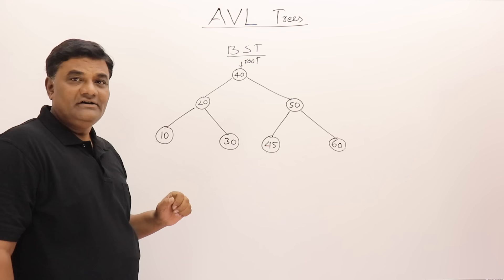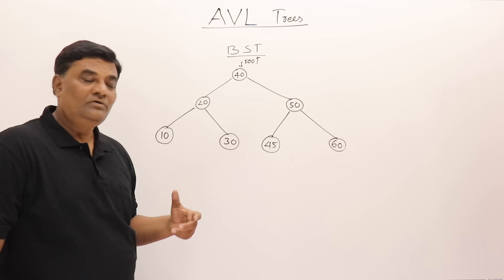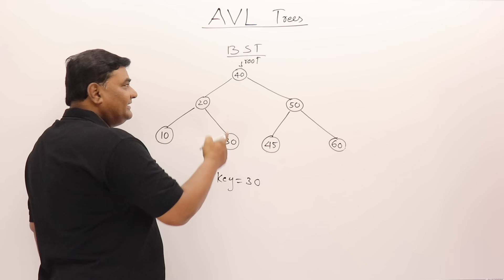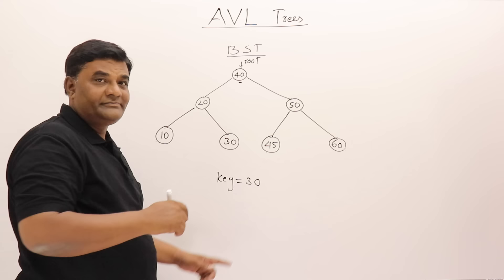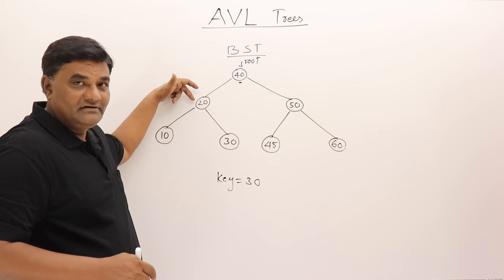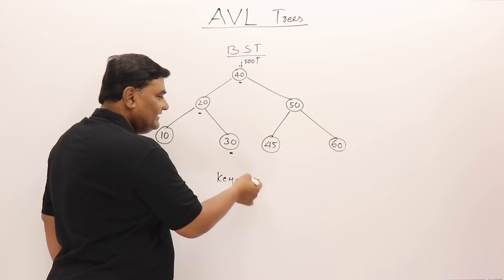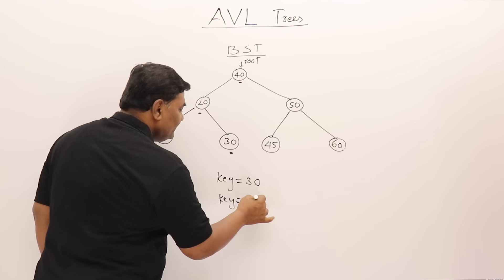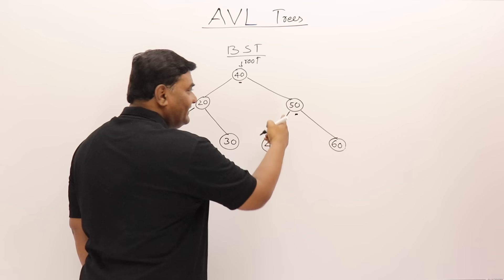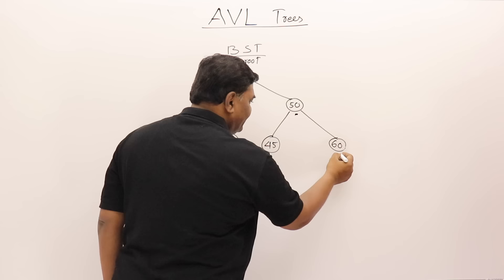This arrangement is useful for searching. Suppose I want to search for key element 30 — I start from root, check if it is 30, go left if smaller, go right if greater, and find it in three comparisons. Similarly, searching for 60: go right twice and find it in three comparisons.